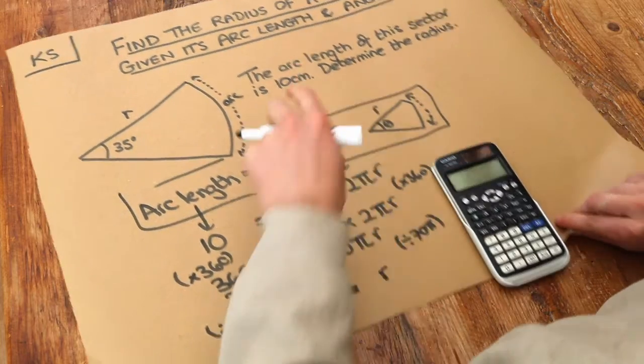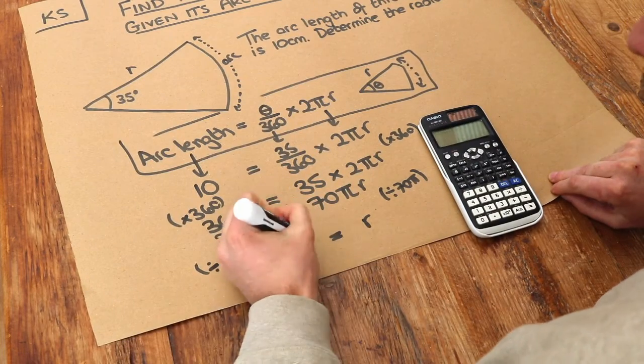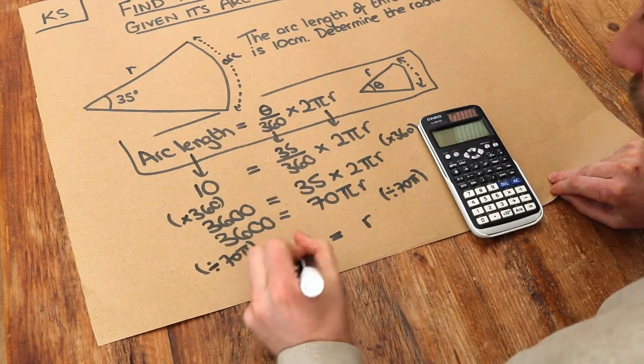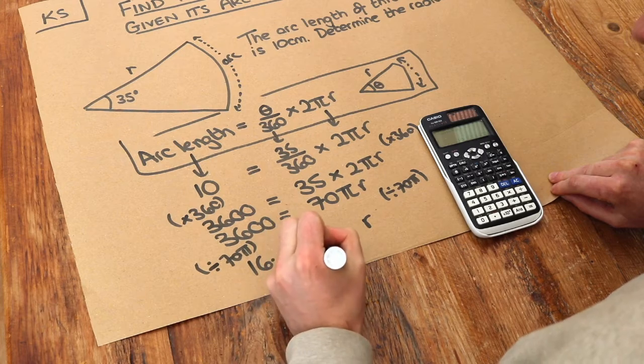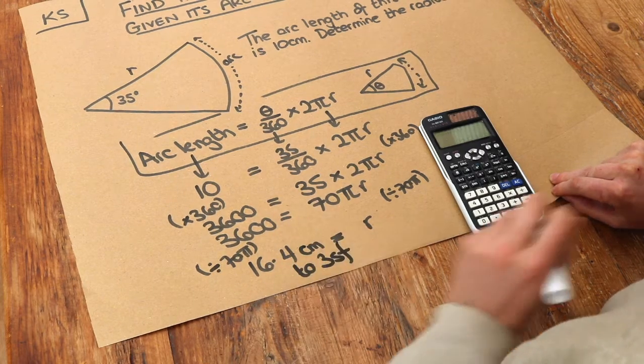What is the unit? Well, the arc length was in centimeters, so the radius is also going to be in centimeters. That was to three significant figures - we should probably specify what we rounded it to.